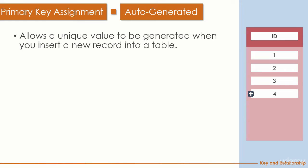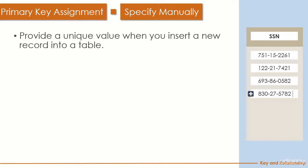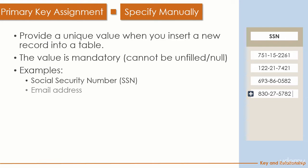Auto-generated ID is very common and efficient — when you insert data, the database engine assigns a new ID automatically, and you can later retrieve it by that ID. The second option is to specify the ID manually. For example, with SSN: when you insert the record, you must provide the SSN — the value is mandatory and cannot be null. Other examples of manually assigned primary keys include email address (if you don't allow users to change it) or ISBN.